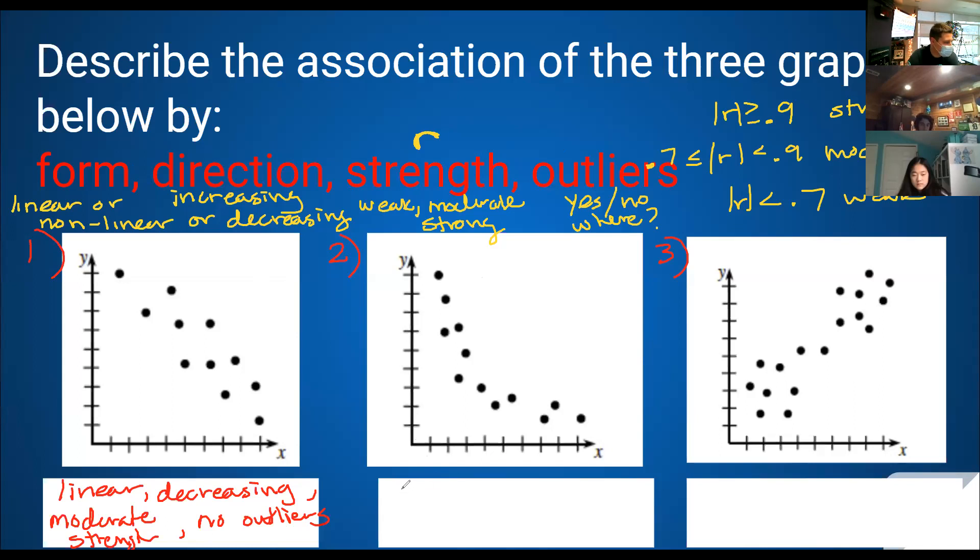I said non-linear, decreasing, weak, and there's no outliers. Yeah, you're right. Non-linear, it's kind of curved. So that's definitely not a line. You said decreasing. That's right. Yeah, if you're not in a line, guess what? You're automatically going to be weak. And there are no outliers? Nailed it. Good. What was the last one you wrote on the first one? No outliers. Oh, strength. Moderate strength. That's all that was.